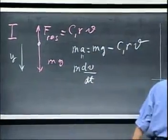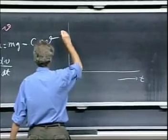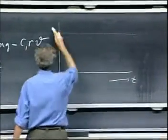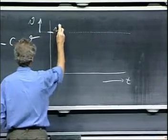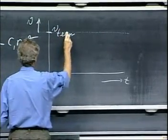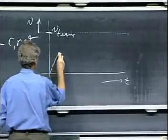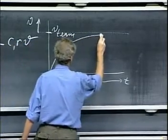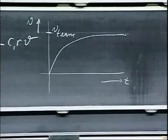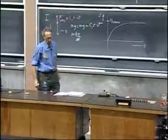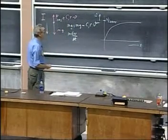What you're going to see is that the speed as a function of time is going to build up to a maximum value, which is the terminal velocity — or terminal speed — and it's going to asymptotically approach the terminal speed. That is what I'm asking you to calculate on your fourth assignment.